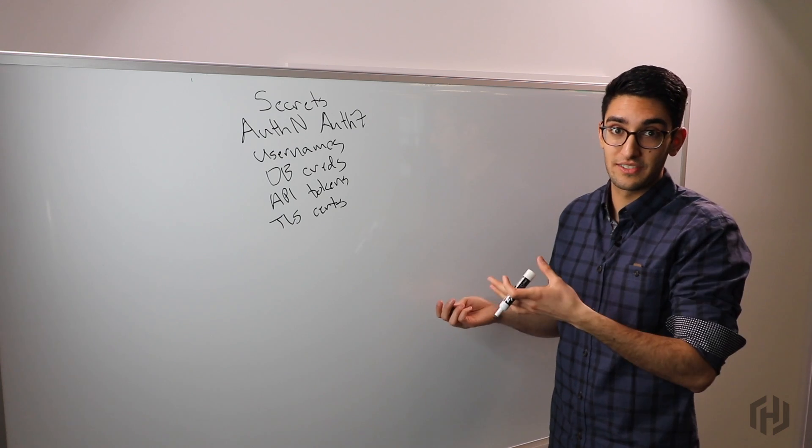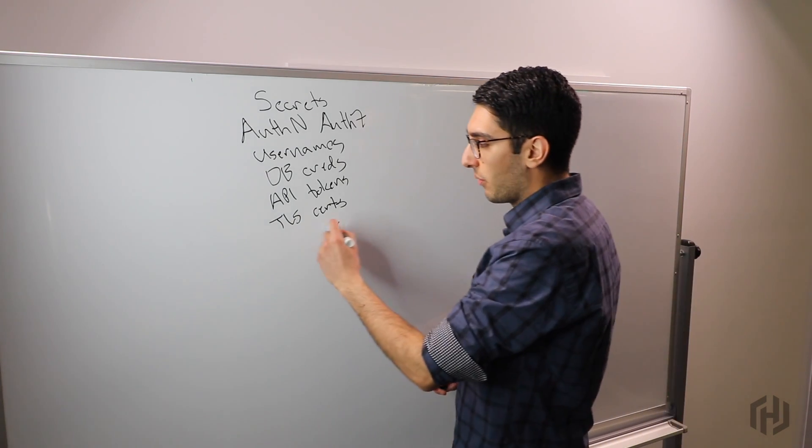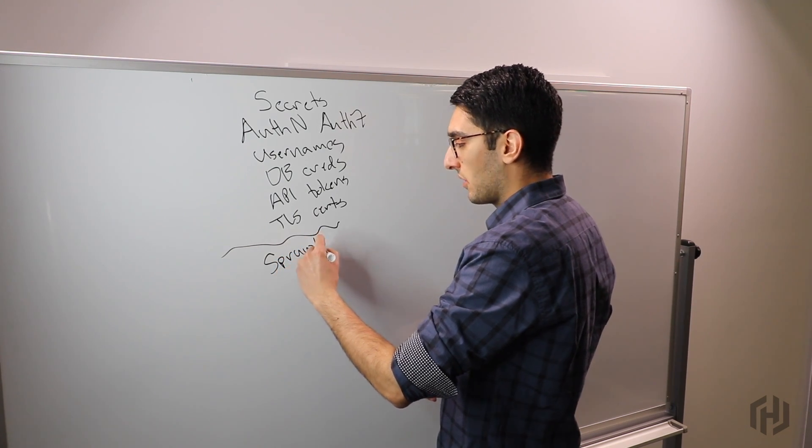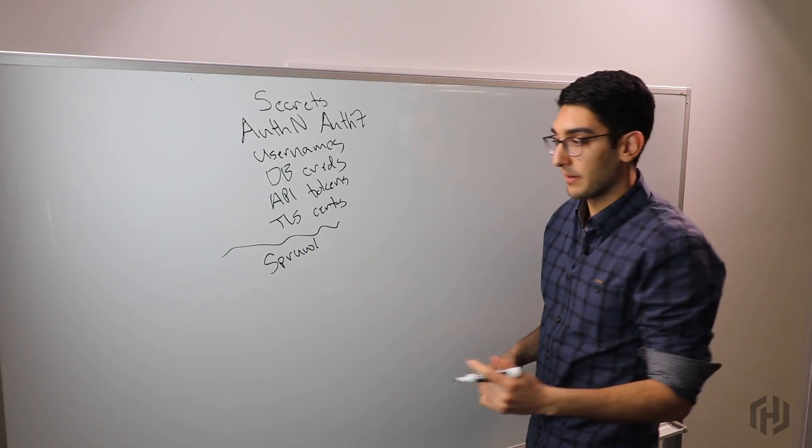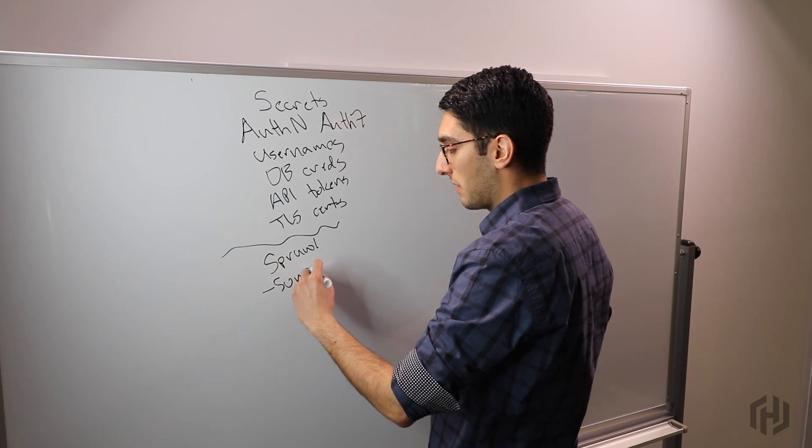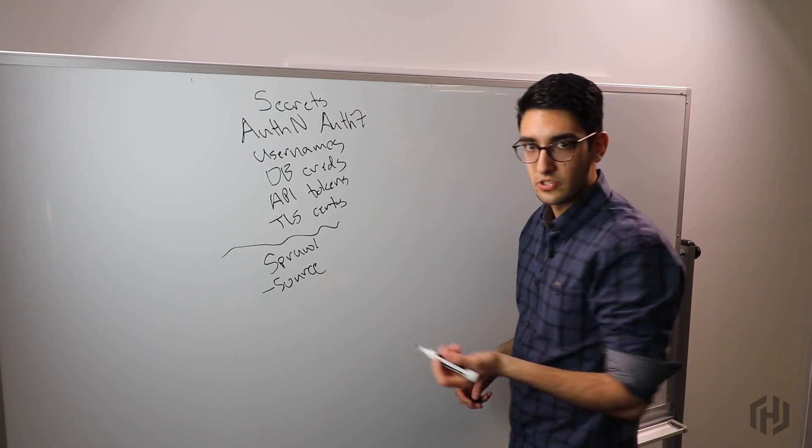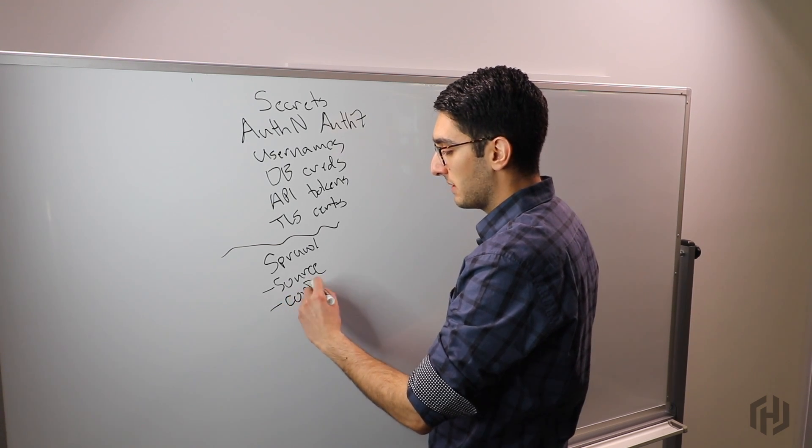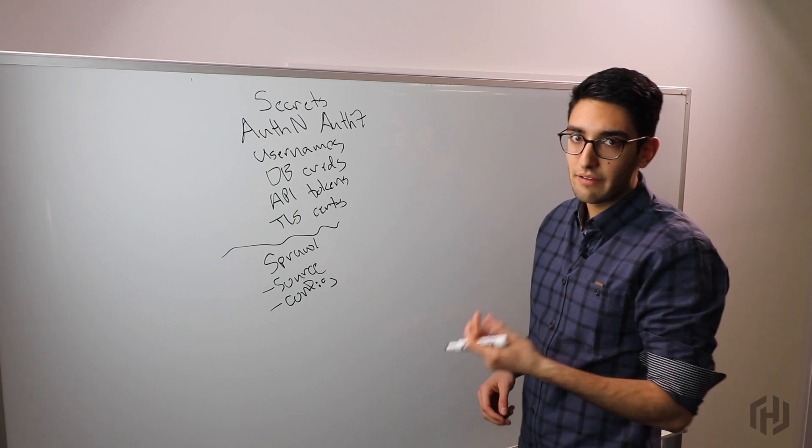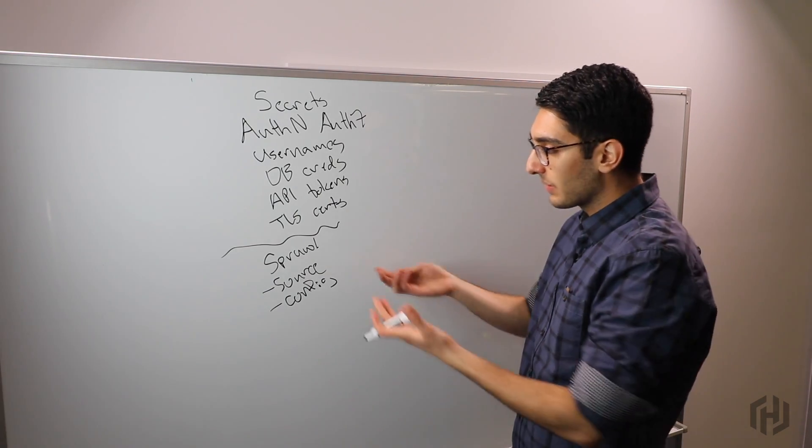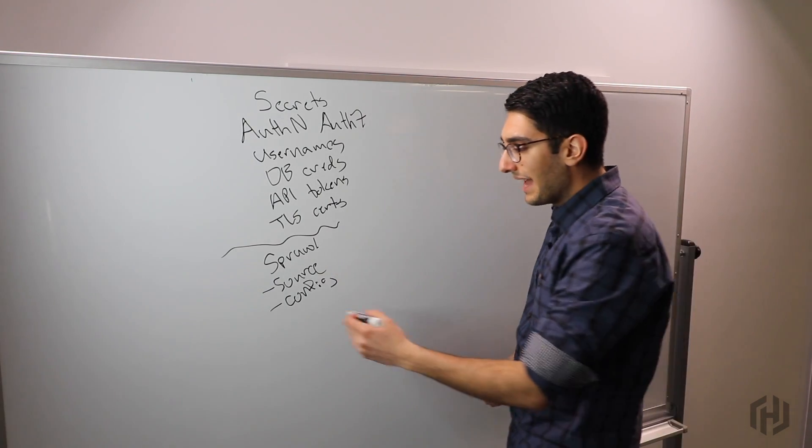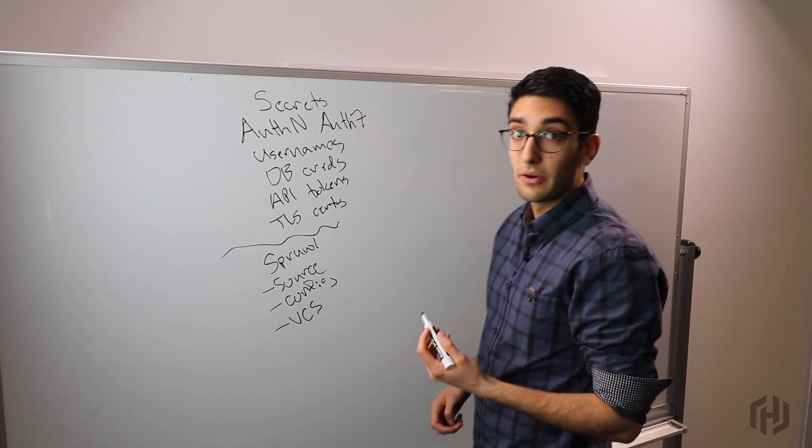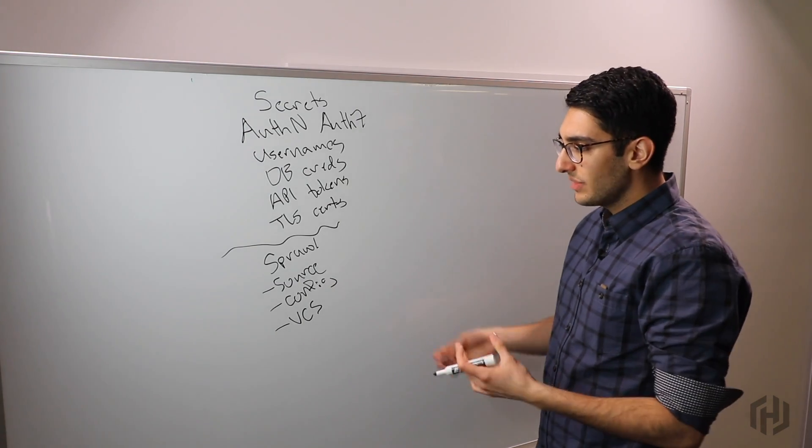When we look at the state of the world of how these things get managed in practice, we see secret sprawl. What we mean by secret sprawl is that these end up everywhere. They're in plain text inside our source code, hard-coded in headers with usernames and passwords. They end up inside configuration management like Chef, Puppet, or Ansible in plain text, and ultimately all of this typically ends up living in a version control system like GitHub, GitLab, or Bitbucket.